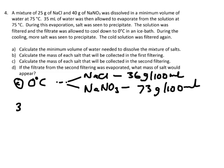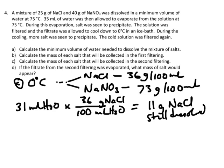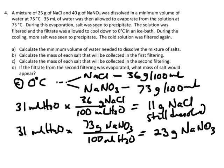Let's take our 31 mils of water and do two calculations. First, grams of sodium chloride still dissolved: 31 mils times 36 grams per 100 mils of water gives 11 grams of sodium chloride still dissolved at 0 degrees Celsius. Then for sodium nitrate: 31 mils of water times 73 grams of sodium nitrate per 100 mils of water gives 22.6 — so 23 grams of sodium nitrate still dissolved.